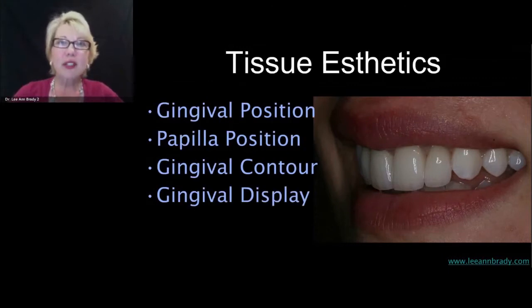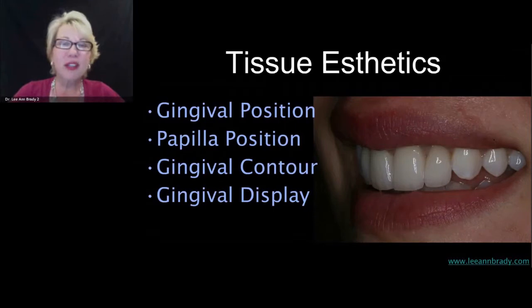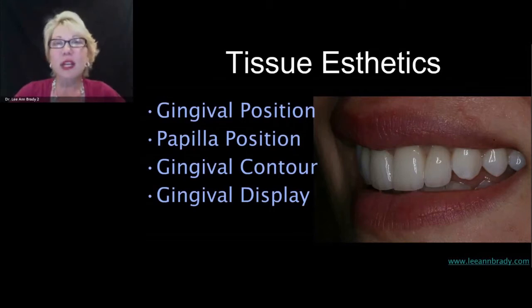When we talk about tissue aesthetics and gingival aesthetics, we'll cover a few different topics. We're going to talk about gingival position — the actual location of the gingival crest relative to the teeth, the smile, and the face. We'll also spend time on papilla position, contour and our options, and lastly, gingival display — more importantly, excessive gingival display, which is a treatment planning issue we commonly encounter when looking at aesthetics.